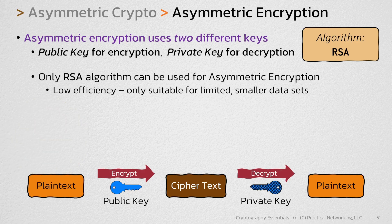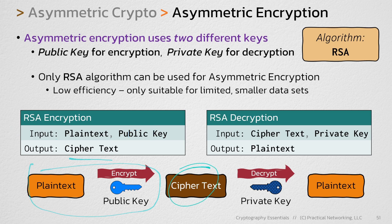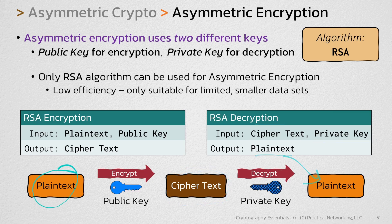To do RSA encryption, you would feed into the formula the plaintext you're trying to encrypt and the public key — the result will be the ciphertext. Then, to undo this with RSA decryption, you would feed in that same ciphertext and the private key, and the result will be identical to the original plaintext you started with.